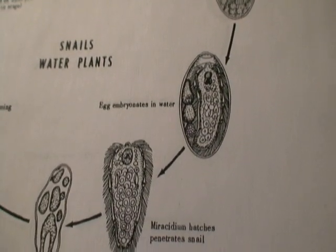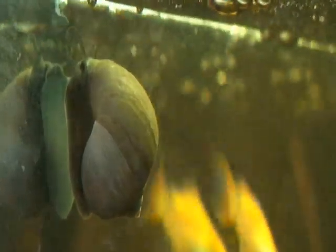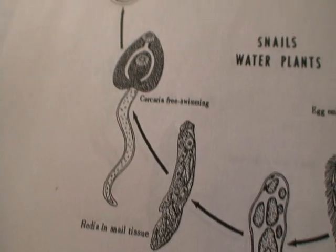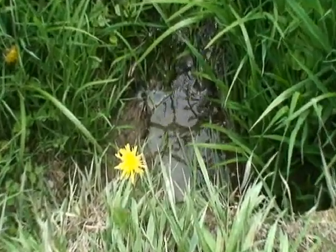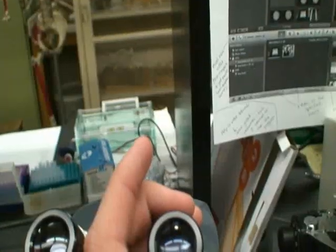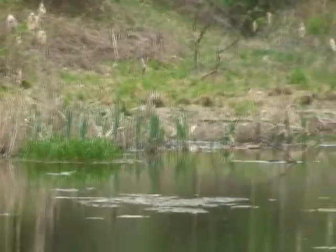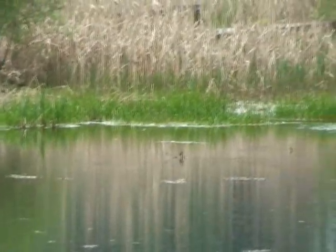The miracidium stage is designed to seek out and penetrate the tissue of a snail. Inside the snail host, it then forms a sporocyst, which develops into a redia. Cercaria are released from the redia and exit the snail. The parasite is once again free-living inside a body of water. Since these stages are microscopic, they could theoretically live in a body of water ranging from a puddle to a pond. Once the swimming cercaria finds a water plant to attach to, it sheds its tail and enters its infective life stage, the metacercaria.